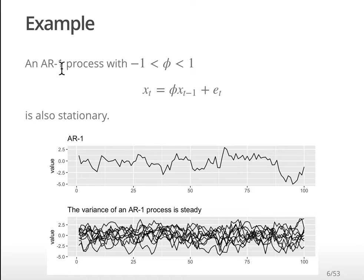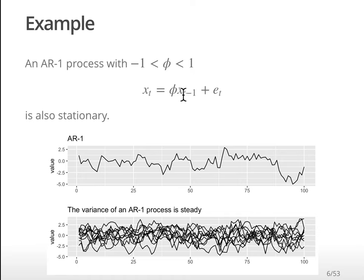What does AR1 mean? What does that terminology mean - the 1 here? AR means that Xt is a function of Xt minus 1, and the 1 is the number of lags we have. In this case we just have 1, so we just have Xt minus 1. If we had 2, we would have Xt minus 2.